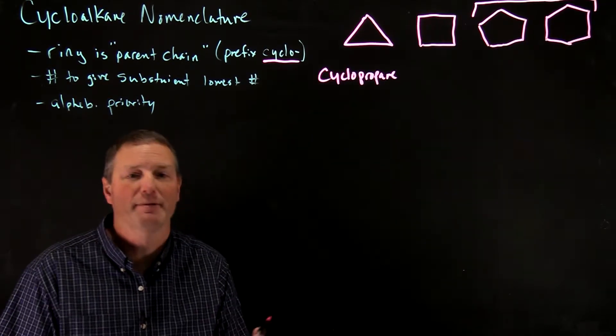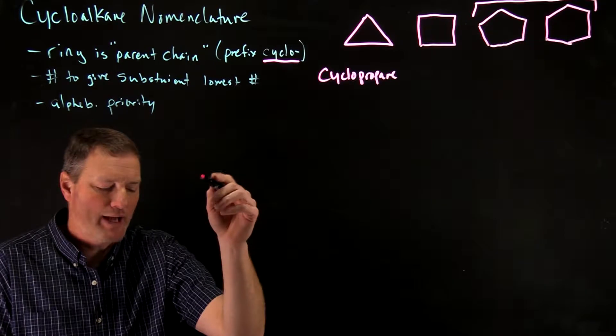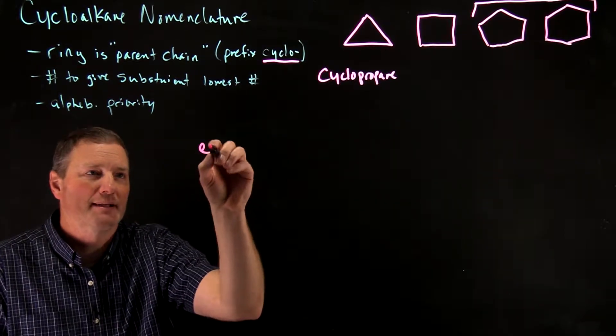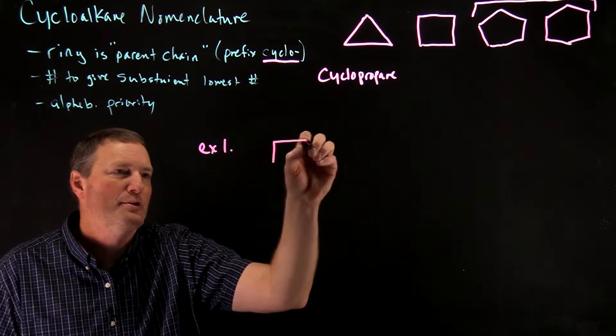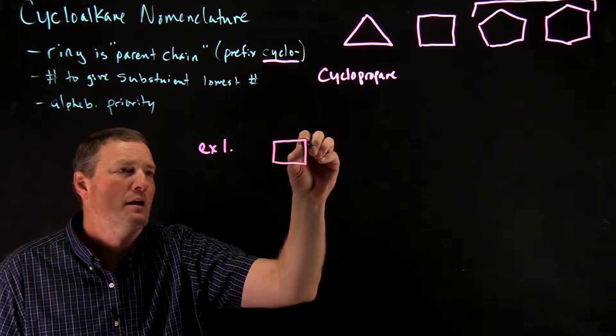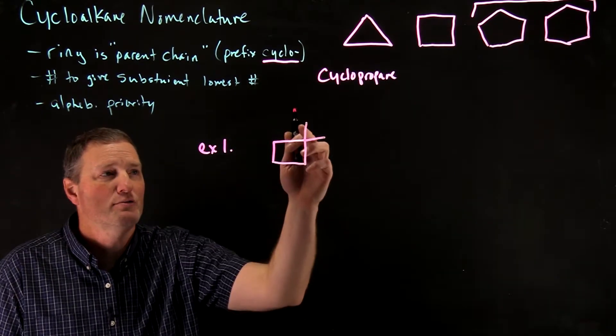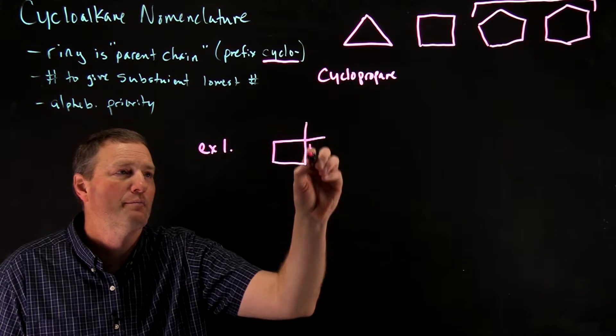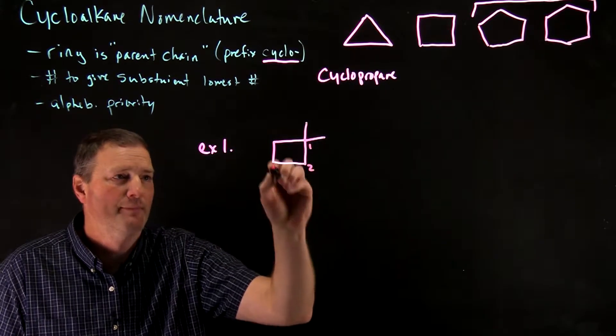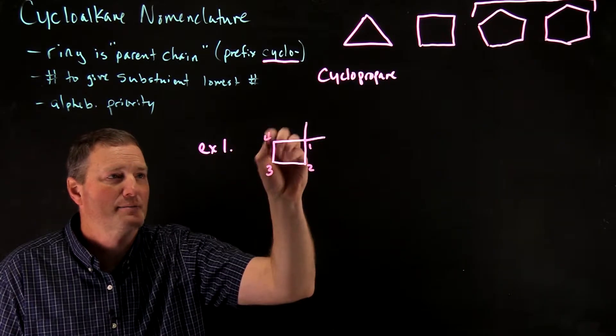Alright, so let's just look at a couple examples in terms of numbering these and how you would actually name something like this. Let's look at the first example, a cyclobutane derivative. Here's a cyclobutane that now has two methyl substituents coming off of it. So I want to number the parent chain, the ring, to give those branches, those substituents, the lowest possible number.